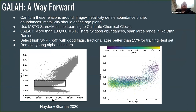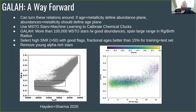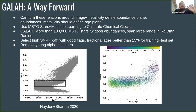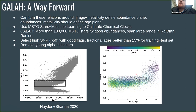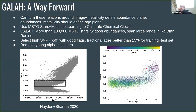We can turn this idea around: if age and metallicity define the abundance plane, then abundances and metallicity should define the age. We're going to use turnoff stars and machine learning to calibrate our chemical clocks. We have more than 100,000 turnoff stars in GALAH with good abundances spanning a large range of guiding or birth radius. I've also removed the problematic young alpha-rich stars from the training set, so I don't want to confuse the machine learning algorithm.